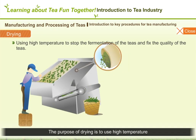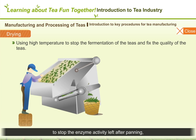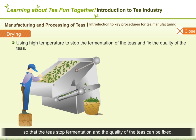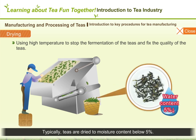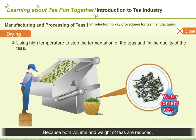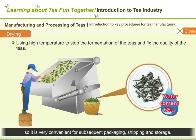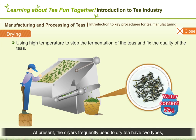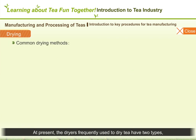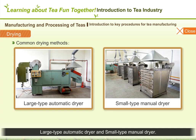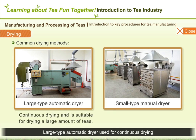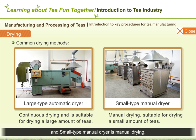The purpose of drying is to use high temperatures to stop the enzyme activity left after panning, so that the tea stops fermenting and the quality of the teas can be fixed. Typically, teas are dried to a moisture content below 5%. Because both the volume and weight of teas are reduced, it is very convenient for subsequent packaging, shipping, and storage. The dryers frequently used have two types: a large-type automatic dryer suitable for drying large amounts of teas, and a small-type manual dryer suitable for drying small amounts of teas.